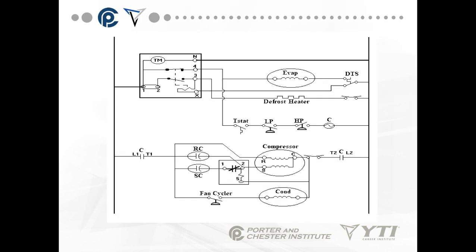This is one example of a refrigeration wiring diagram. This area up here on the left is a commercial defrost time clock. It has a clutch solenoid in it, right where my mouse pointer is, and it has pins 1, 2, N, 4, 3, and X. X goes to the termination side of my defrost thermostat. Pin 4 is my evaporator fan and my compressor contacts. My compressor and condenser are here, controlled on a contactor, which is labeled C.